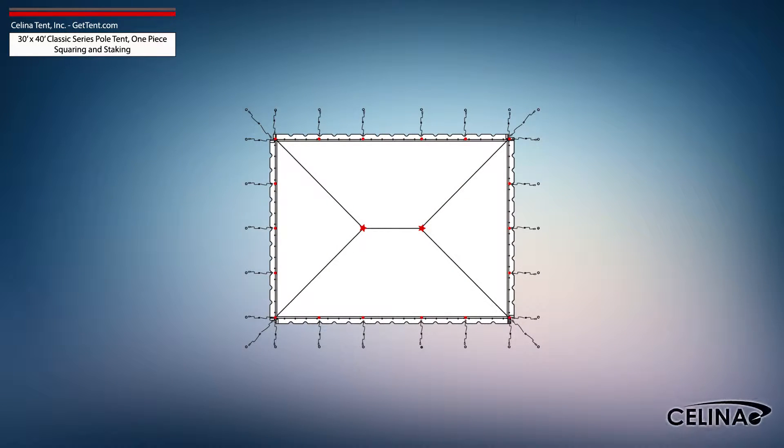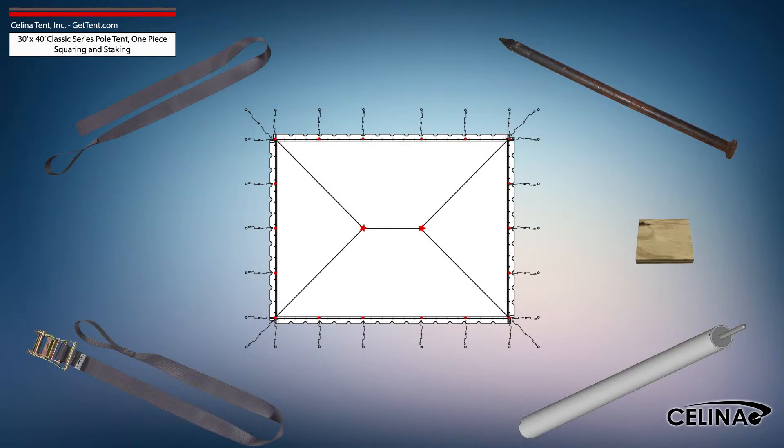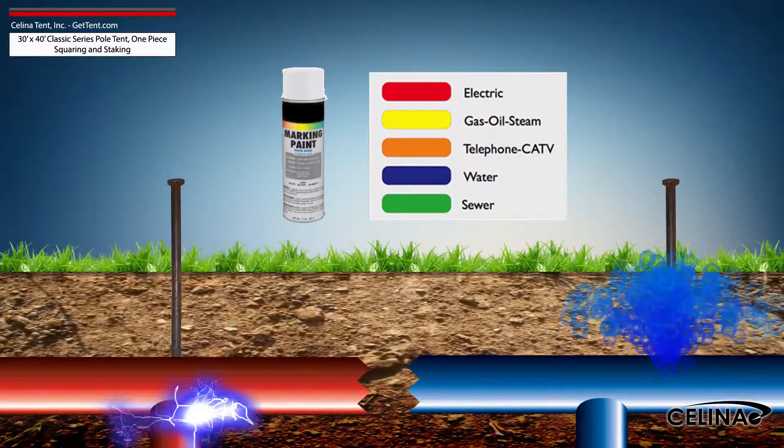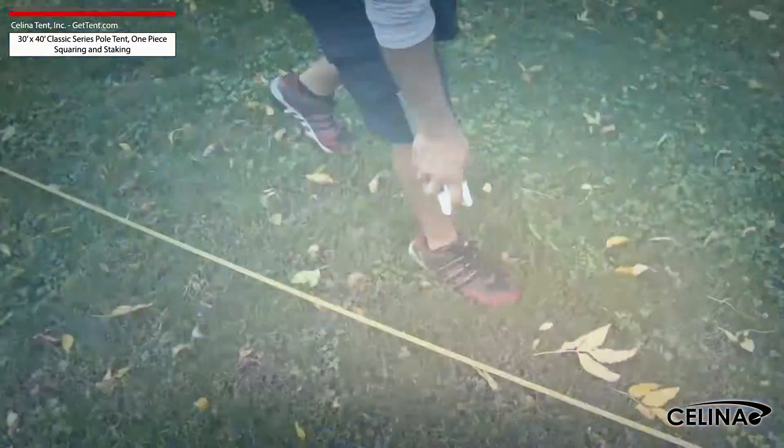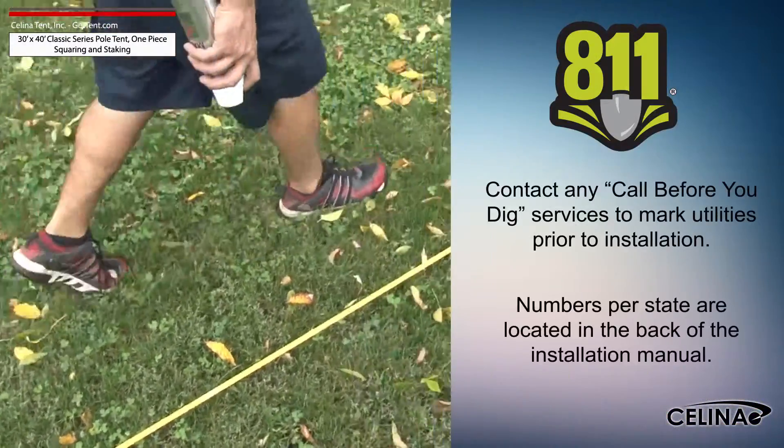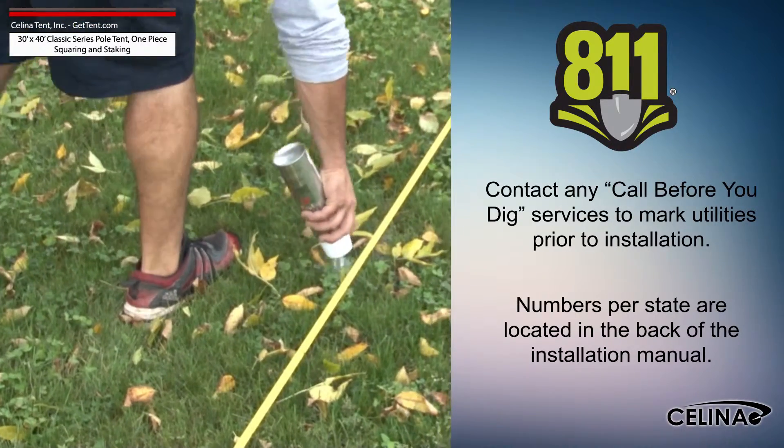Tent squaring allows the installer to accurately place all tent hardware and install tent stakes prior to beginning setup and helps them avoid any marked underground utilities. Utilities must be marked by your state's local utility services prior to any tent installation.